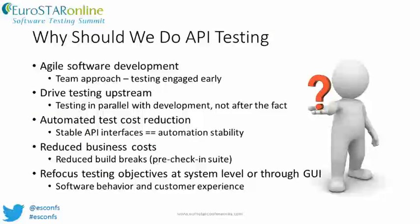There are many benefits to API testing. First, API testing engages testers early in the development lifecycle and enables them to participate in all aspects of the project. It also helps drive testing upstream through earlier functional testing and by working more closely with teammates in development. API testing can also potentially reduce automation maintenance costs. GUI automation can be unstable due to changes in the user interface, but API interfaces stabilize much earlier in the development lifecycle.